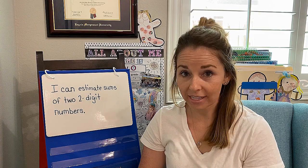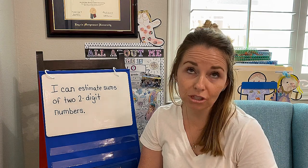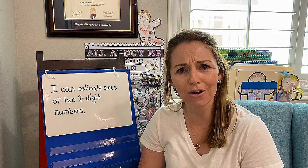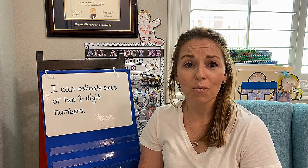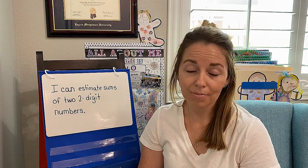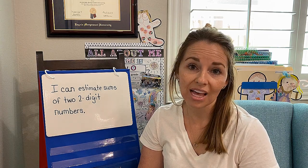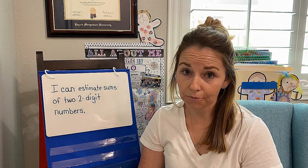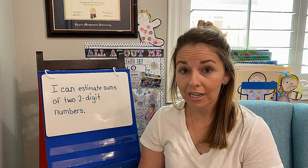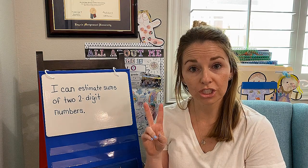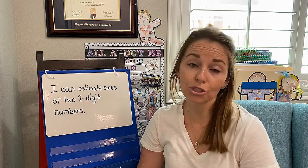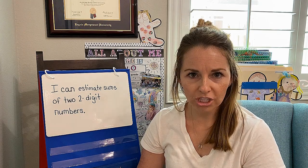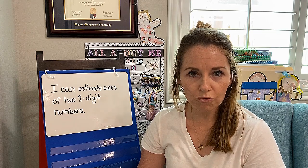Rounding uses place value. If you think all the way back to the very beginning of the year — I know it's a very long time ago — we learned about place value. A place value tells us that numbers have homes, and these homes have a value. Today we're going to be focusing on two-digit numbers, which means we're going to be rounding to the tens place. Remember this chant as we move forward.